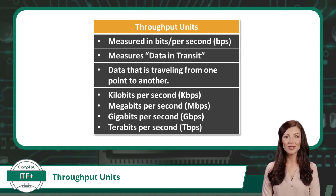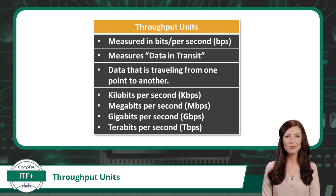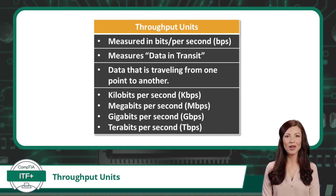Up next is terabits per second, which are quantities measured in trillions of bits per second. Throughput rates in this range are relatively new and not very common.